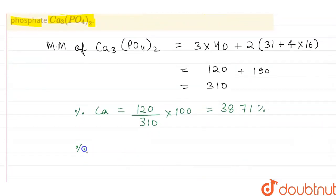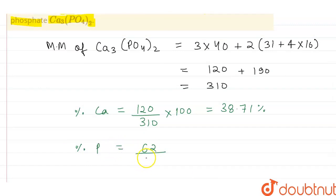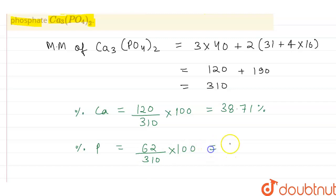Mass percent of phosphorus = 62 ÷ molecular mass of calcium phosphate (310) × 100 = 20%.